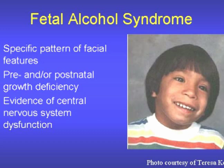In order to be diagnosed as having FAS, the individual must meet all three criteria. There is a specific pattern of facial anomalies. There is pre- and/or postnatal growth deficiency — usually the children are born small, less than the 25th percentile, and remain small at least until puberty. Finally, there must be evidence of central nervous system dysfunction. This CNS dysfunction might be physical, for example microcephaly, or behavioral, for example hyperactivity and mental retardation.